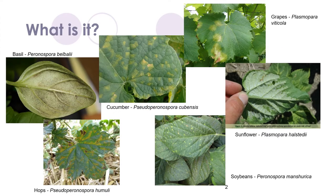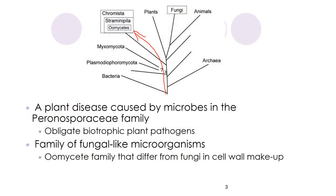Downy mildew is caused by a broad range of pathogens affecting a broad range of hosts, including basil and grapes, as well as many more. Downy mildew is a plant disease caused by microbes of the Peronosporaceae family. These are obligate biotrophic plant pathogens, and while they act very similar to fungi, they are not fungi themselves.